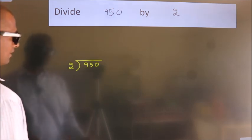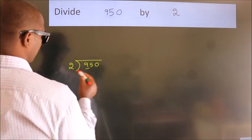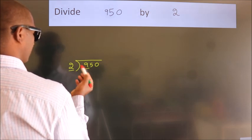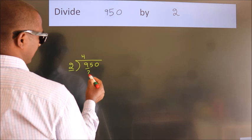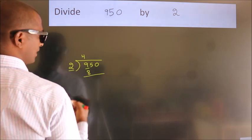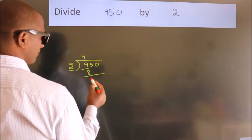Next. Here we have 9, here 2. A number close to 9 in 2 table is 2 fourths, 8. Now we should subtract. We get 1.